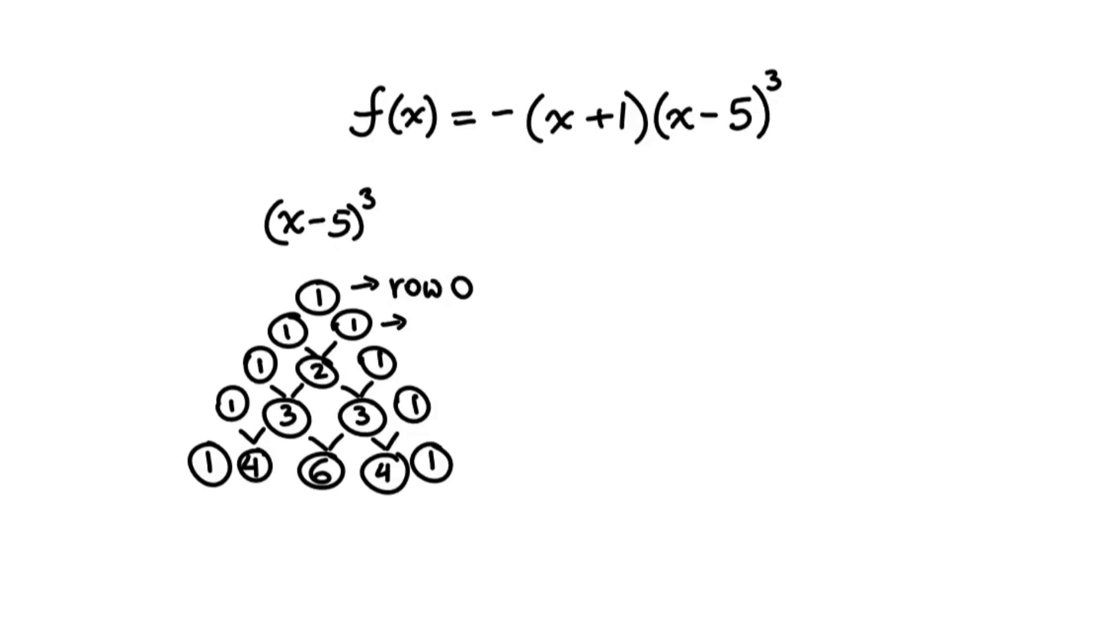When you have the second row in the triangle, this is really row 1, and it represents the exponent of the expression, the degree of the expression. And then the third row is row 2, and then this one is row 3, and this one is row 4. So since, in our case, the expression is cubed, it means we need to choose row 3. And the values in this row are the coefficients of the terms of this expression in the expanded form.